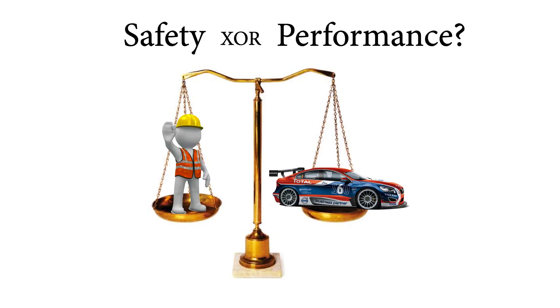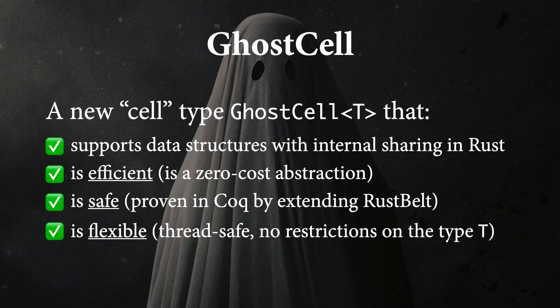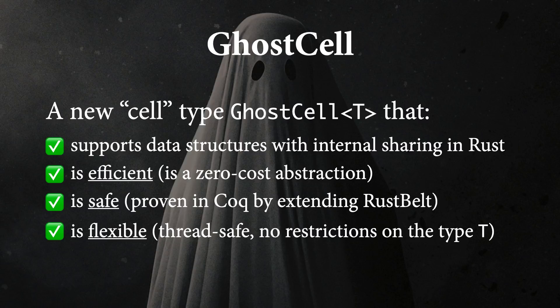Is that a fundamental trade-off, or can we do better? The answer is yes, we can do better. In this paper, we propose a new solution called GhostCell. GhostCell is a new cell type which, like the existing cell types, provides support for interior mutability — for mutating safely through a shared reference. But unlike the existing cell types, GhostCell overcomes the trade-off between safety and performance. First, it's efficient: GhostCell is a zero-cost abstraction, meaning it incurs no dynamic cost in terms of time or space. Second, it's safe: we've done a formal proof that GhostCell is a safe extension to Rust, mechanized within the RustBelt framework implemented in Coq. And last but not least, it's flexible — it is thread-safe and does not place any restrictions on the type of data being shared.